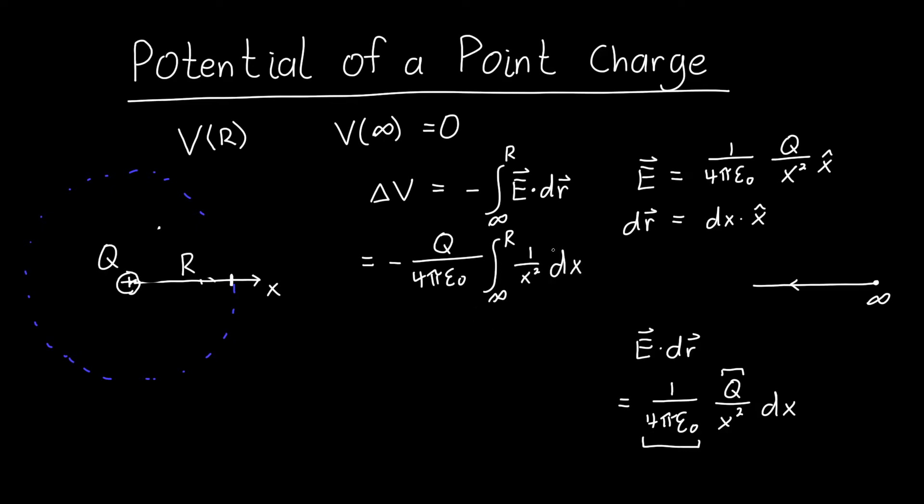And if you do this integral so 1 over x squared integrates to negative 1 over x then you plug in infinity you plug in R. So let's do that real quick we've got negative Q over 4π epsilon naught and then the thing that we integrated is now negative 1 over x and we plug in x equals infinity and x equals R.